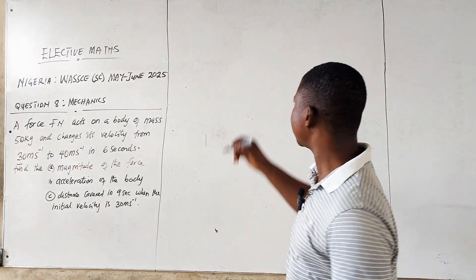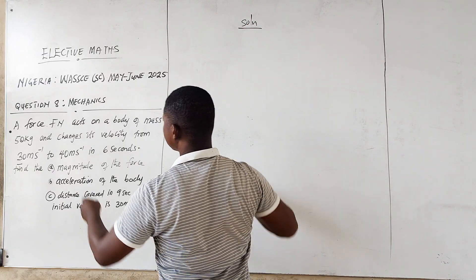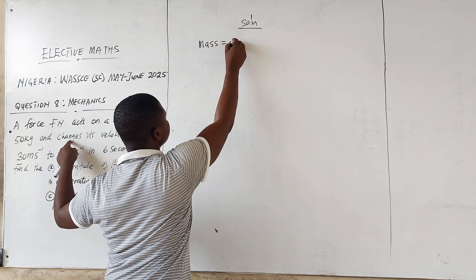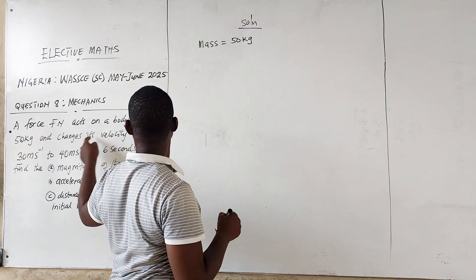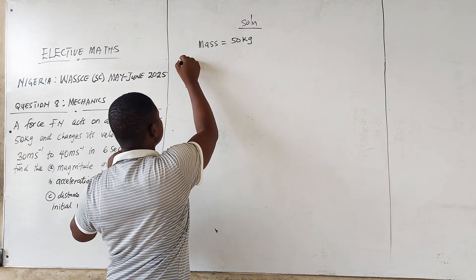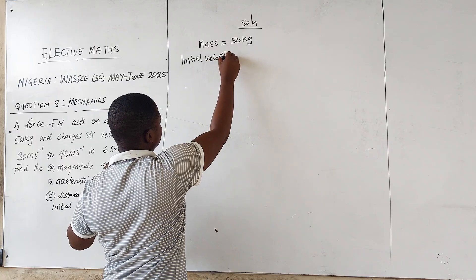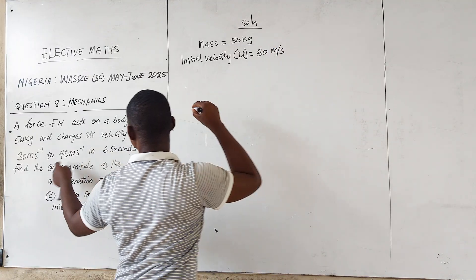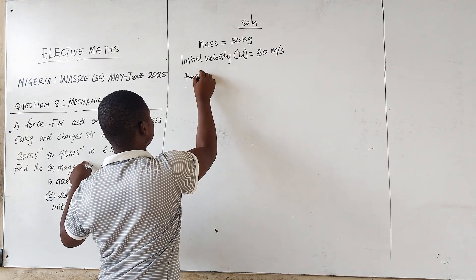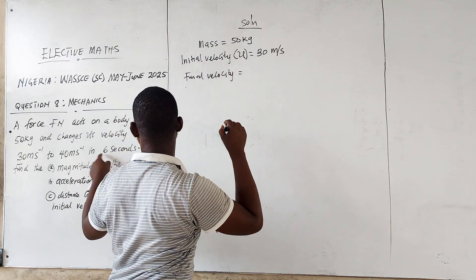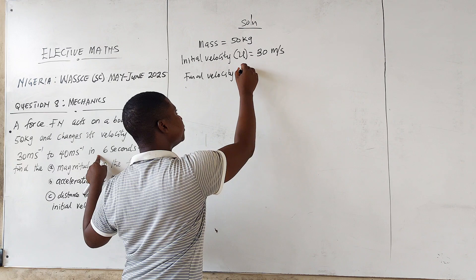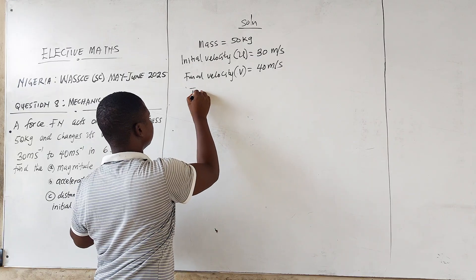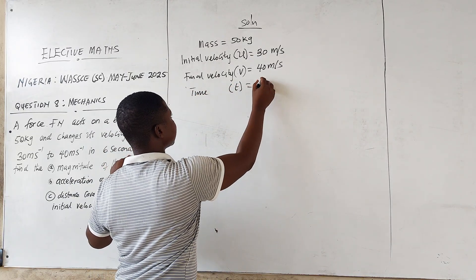Let's write our information down first. We are given a mass of 50 kilograms. Then we are given the initial velocity, u, which is 30 meters per second. The final velocity, v, is 40 meters per second. And we have time t, which is 6 seconds.